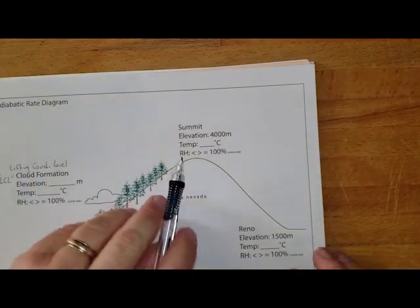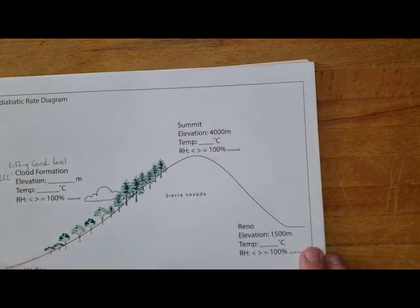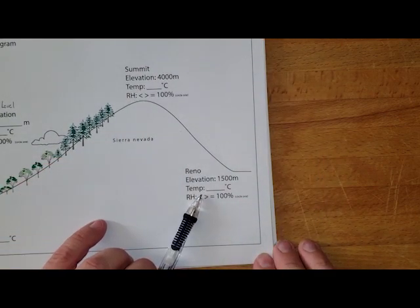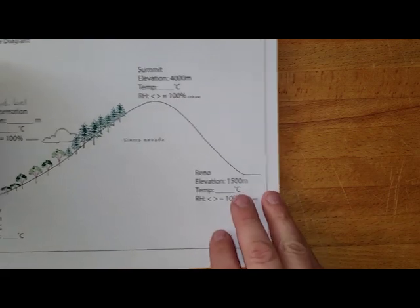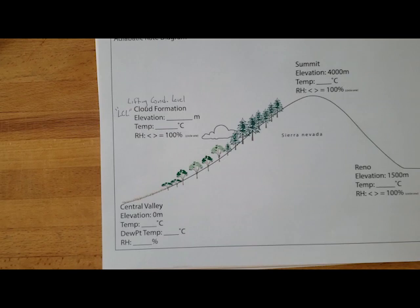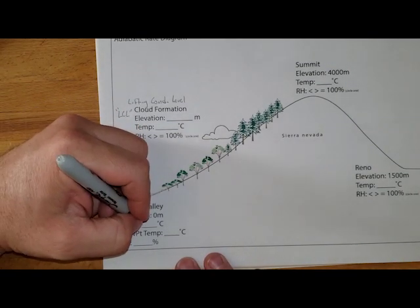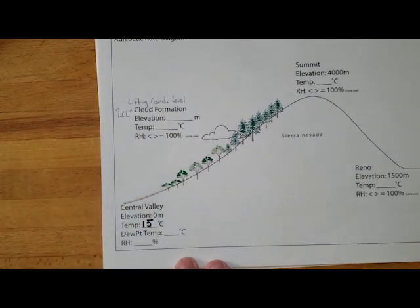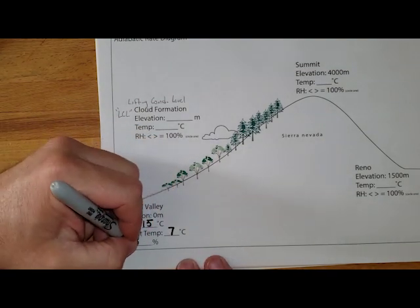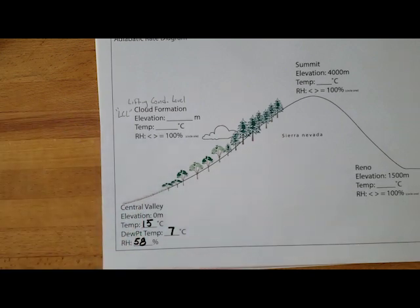Then as the air makes it all the way up to the summit, how has its temperature changed? And then coming all the way back down to Reno, how has its temperature changed? So I went online and got our weather data for today. On this beautiful March afternoon, our temperature today outside is 15 degrees Celsius. We have a dew point temperature of 7 degrees Celsius and our relative humidity is 58%.